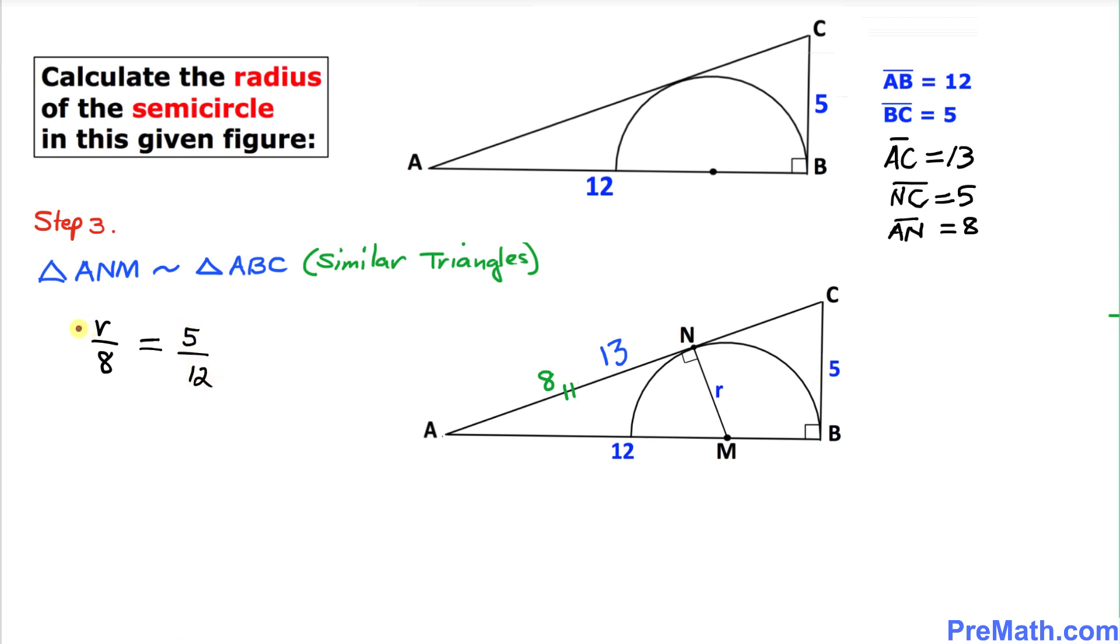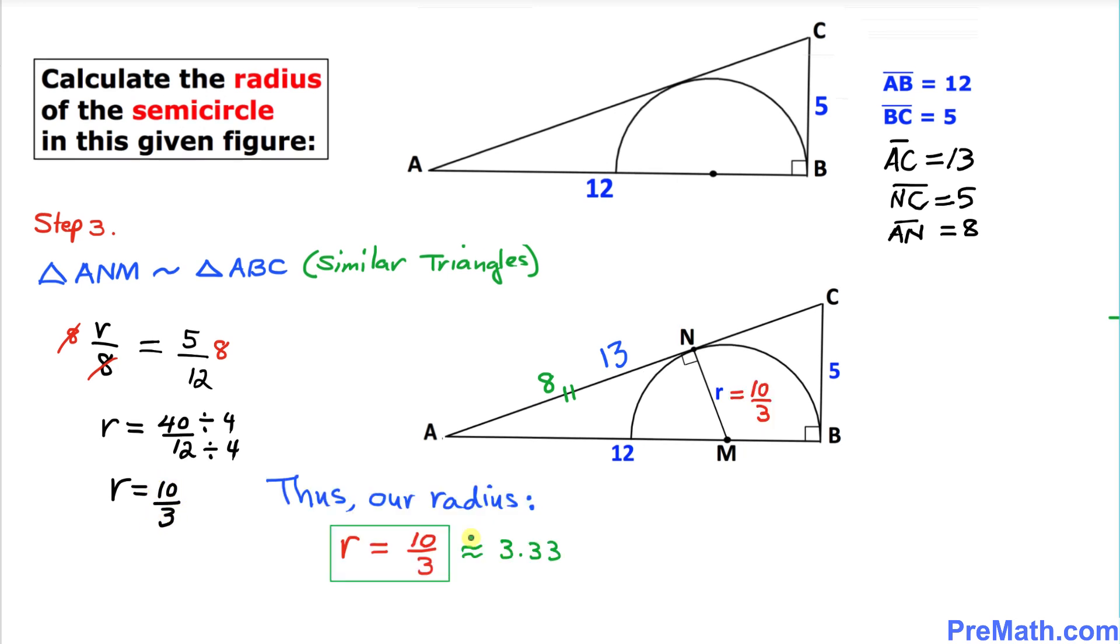Let's multiply by 8 on both sides to isolate R. This 8 and 8 cancel, so we end up with R equal to 40 over 12. We can reduce it by dividing both sides by 4, so R turns out to be 10 divided by 3.